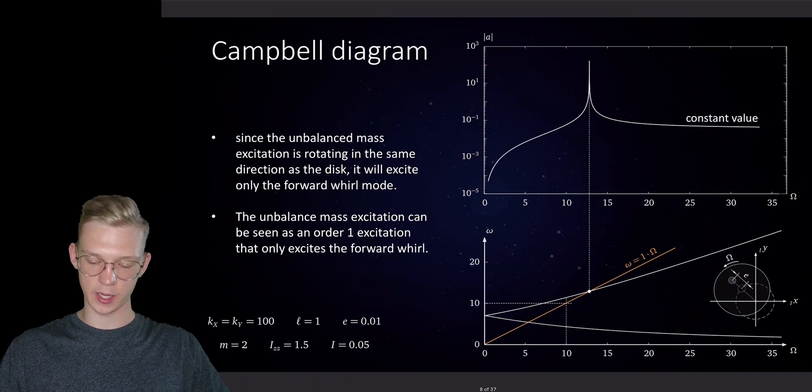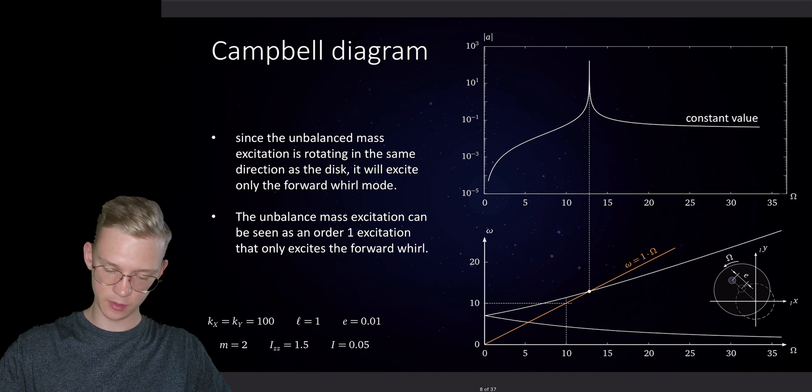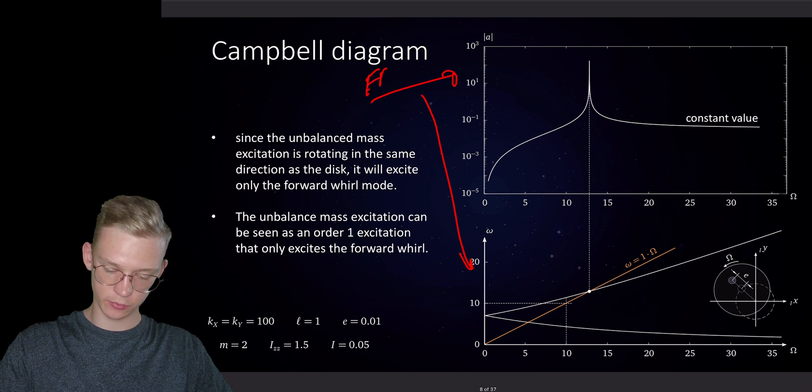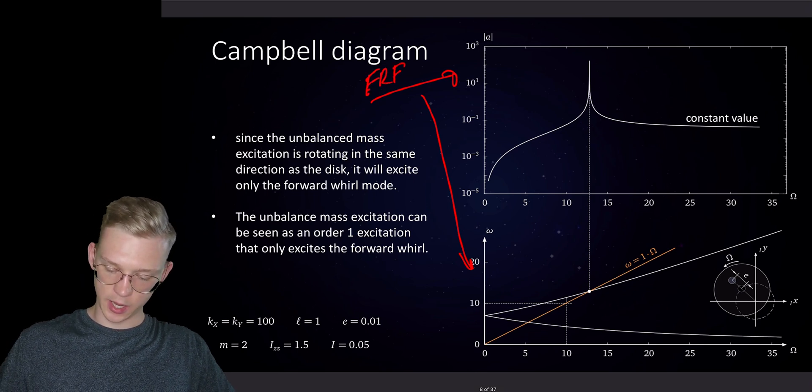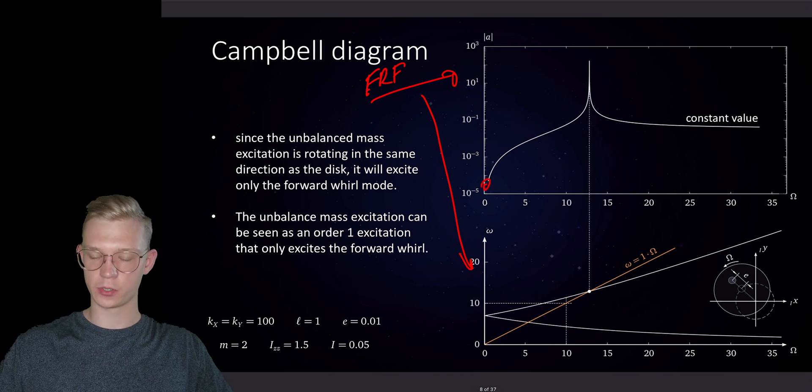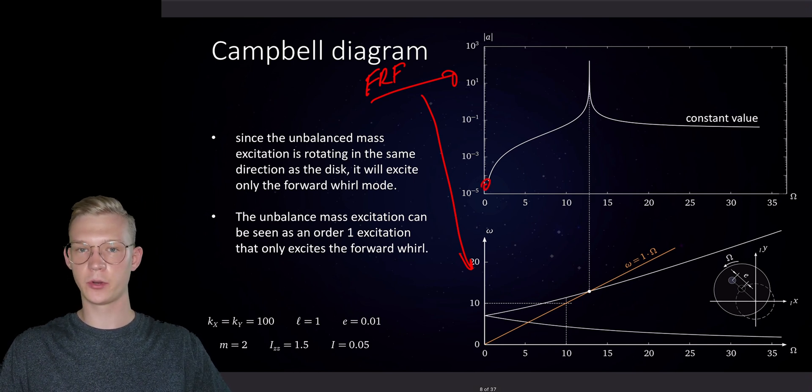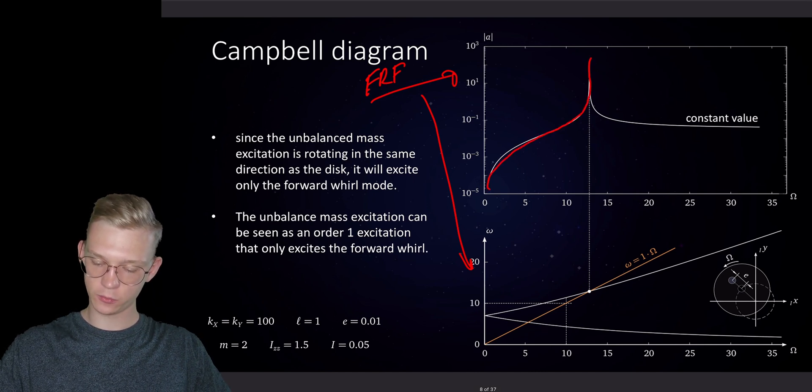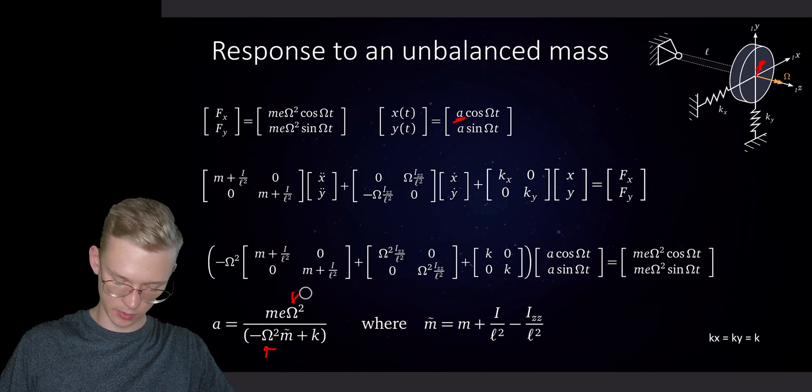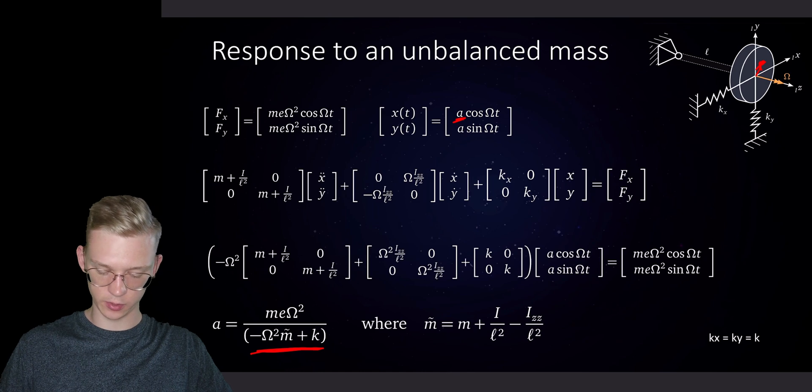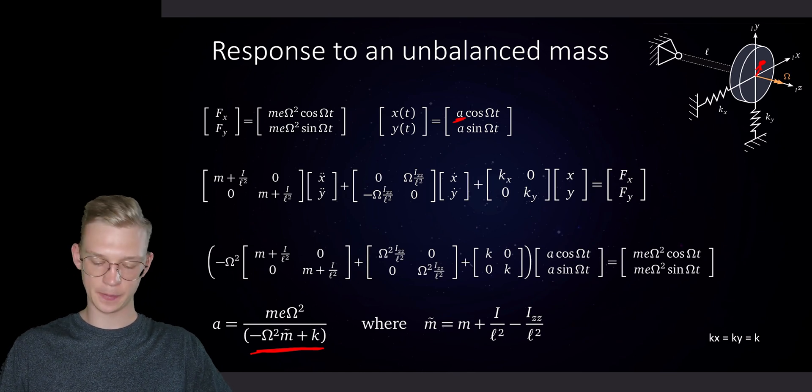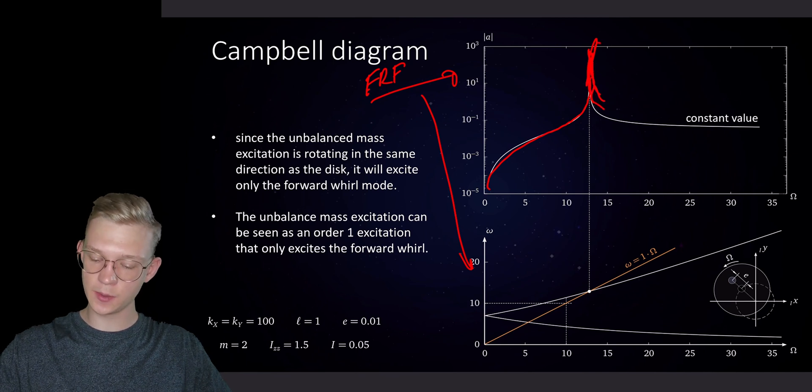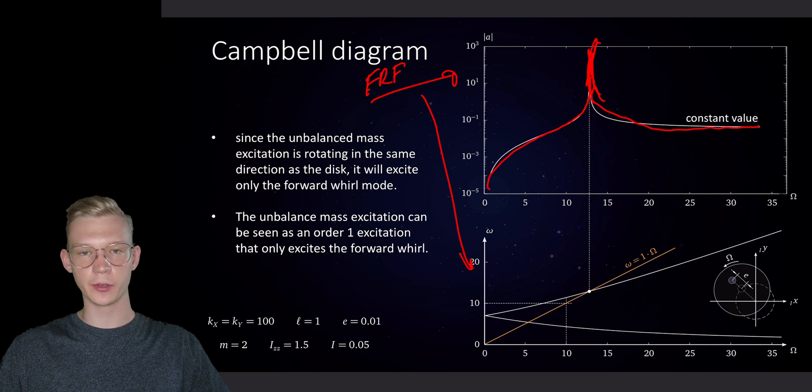This is now again our Campbell diagram and this is our frequency response function. We see that we started at zero because if we're not rotating we're not vibrating. We're slowly approaching our first eigenfrequency going to infinity because we have this equal to closer and closer to zero and this is where we hit the eigenfrequency and then we go down to a constant value.